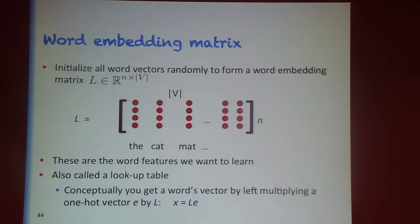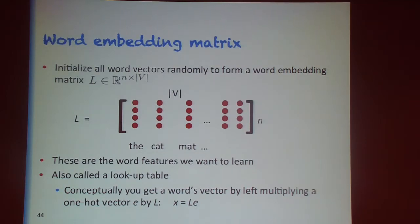This matrix is often called the lookup table, because if you start with a one-hot vector you can pre-multiply it by this matrix and get out the representation for each word — which is just a complex way of saying you're selecting the right column of this matrix.